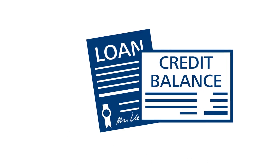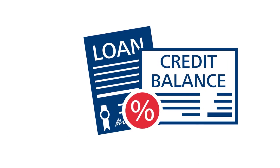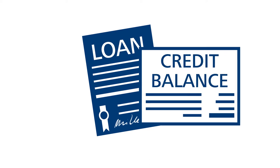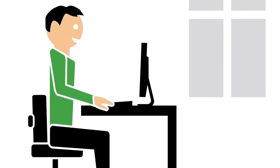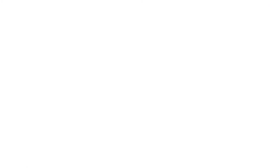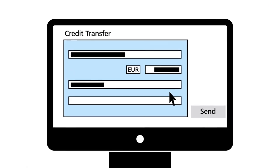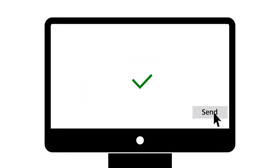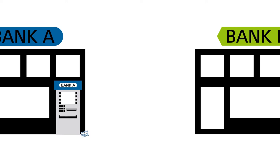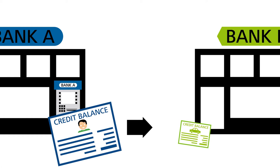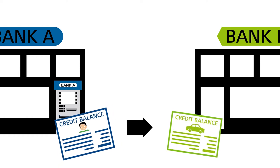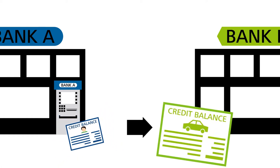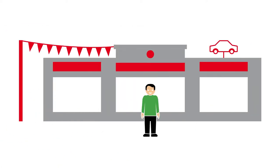Mr. Müller has to pay interest on the loan — the interest is the price of the loan. Mr. Müller can now use this credit balance for payments; for example, he can make a bank transfer to pay for a car. The bank then transfers the credit balance from his account to the car seller's account. The book money flows from one account to the other and Mr. Müller gets the car.